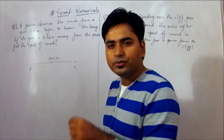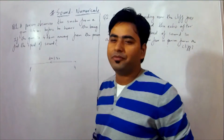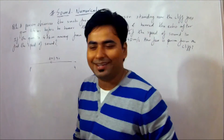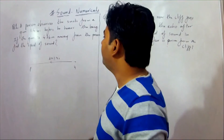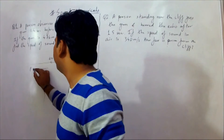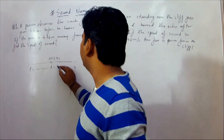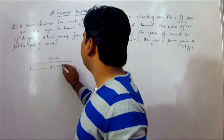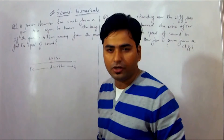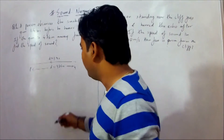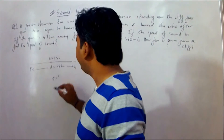Indirectly, the sound of the gun is produced and heard by the person. If the gun is 476 metres away from the person, the distance between the person and the gun is 476 metres. So what do we need to calculate here? The speed of the sound.